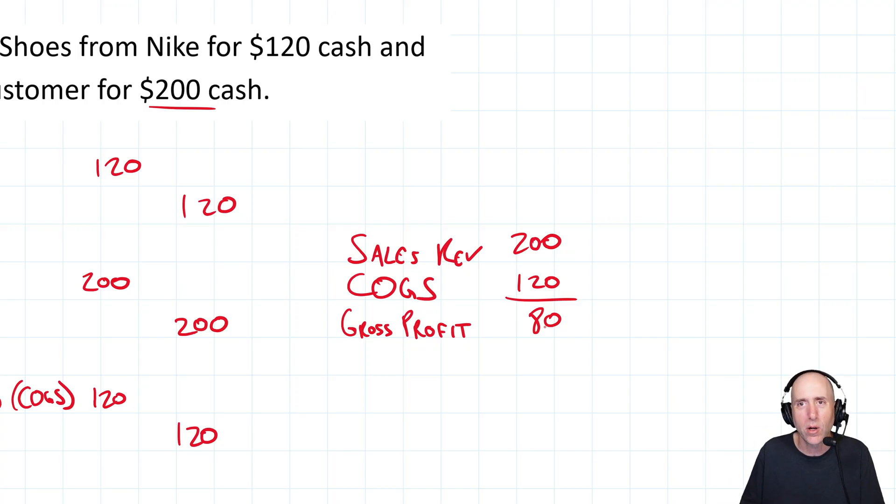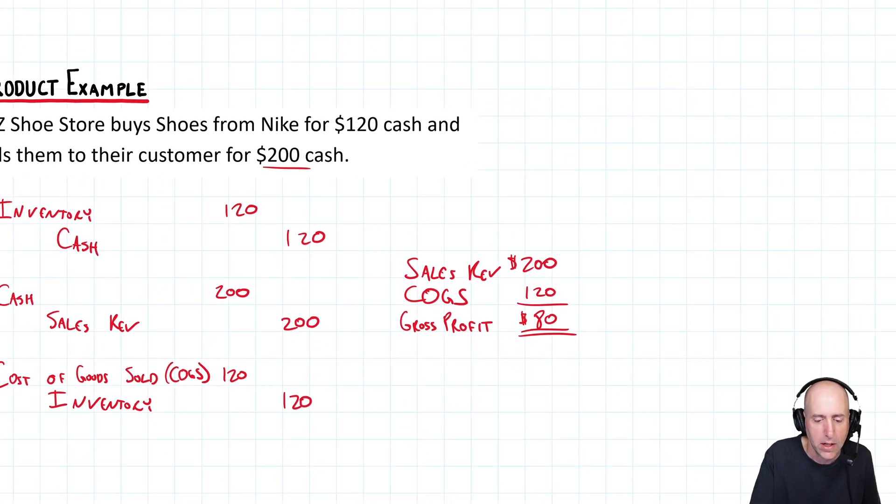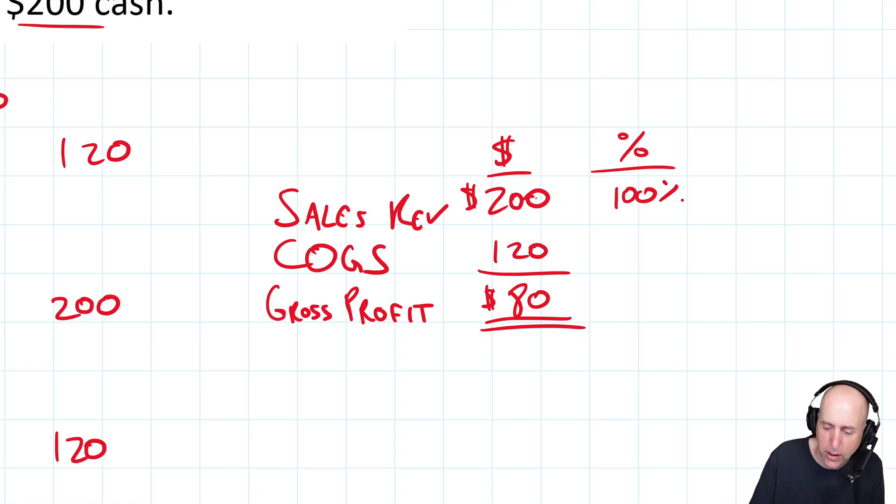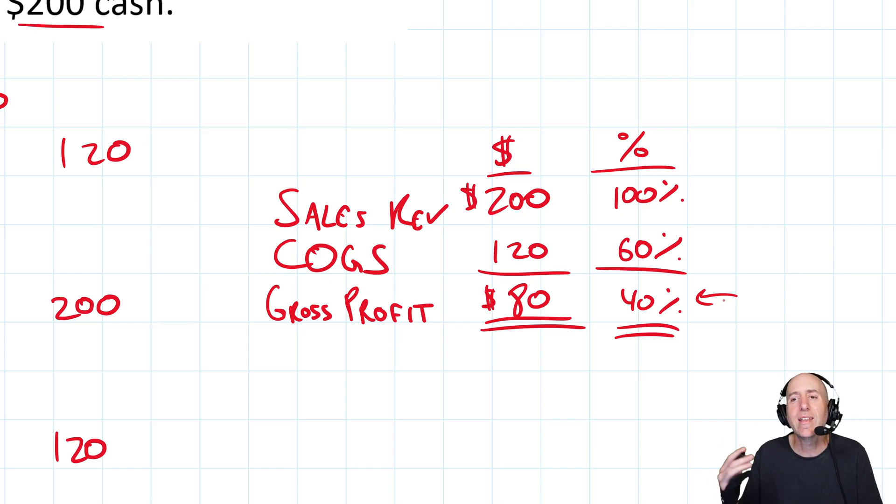And this is a crucial number. If you're running a business, you keep an eye on your gross profit, a critical number to understand. So we know if we're Walmart and we're bringing in these Nikes costing us $120, we sell to our customer for $200, we know we make $80 on every pair of shoes we sell. And that's an important number. In fact, there's a little ratio that companies do. So here's the dollar amount. They like to look at it as a percentage.